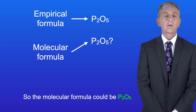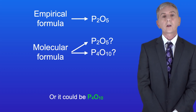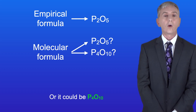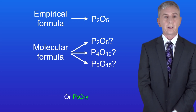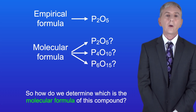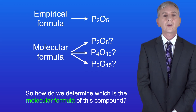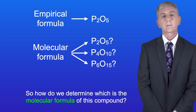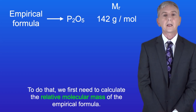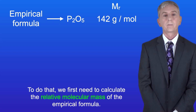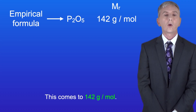So the molecular formula could be P2O5, or it could be P4O10 or P6O15. So how do we determine which is the molecular formula of this compound? Well, to do that we first need to calculate the relative molecular mass of the empirical formula. This comes to 142 grams per mole.